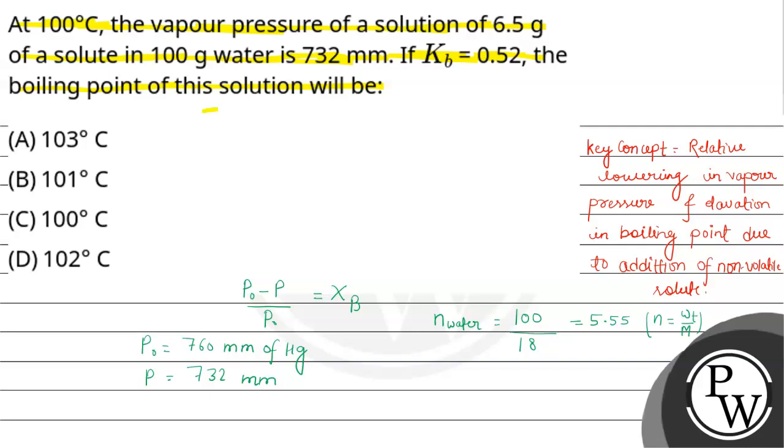We will put the values: 760 minus 732 divided by 760 equals—let number of moles of solute be N—so it will be N divided by N plus number of moles of solvent which is 5.55.